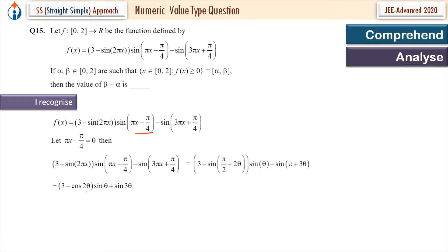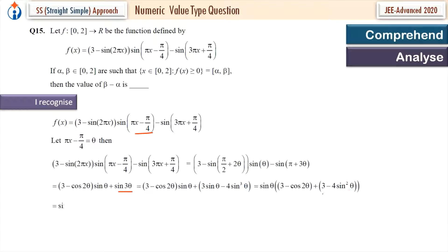Which simplifies to 3 - cos(2θ) multiplied by sin(θ) + sin(3θ). I further simplify this. I put the value of sin(3θ) = 3 sin θ - 4 sin³θ. With 3 - cos(2θ) giving 3 - 4sin²θ, and writing 2sin²θ as 1 - cos(2θ), everything in the bracket is in the form of cos(2θ). So f(x) in terms of θ reduces to sin θ · (4 + cos 2θ).